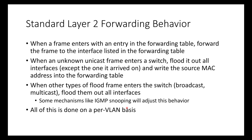Why do bridging loops happen? When a frame enters with an entry in the forwarding table, we forward to the interface listed. When an unknown unicast frame enters a switch, we flood it out all interfaces except the one it arrived on and write the source MAC into the forwarding table. When broadcast and multicast flood frames enter, we also flood out all interfaces. All this flooding is only done within a particular VLAN.